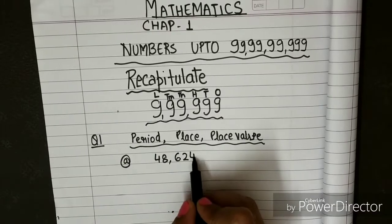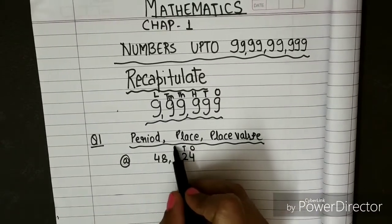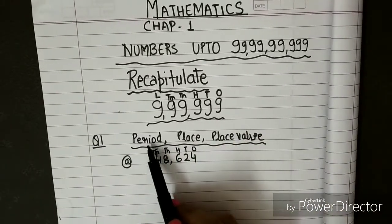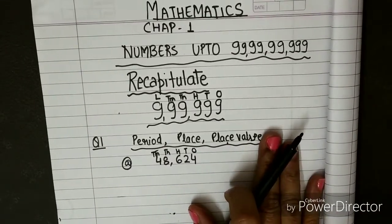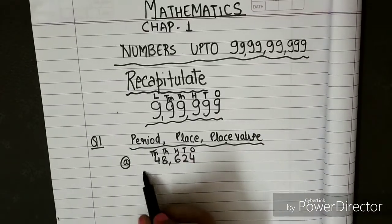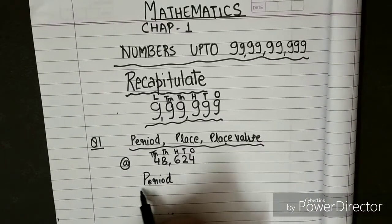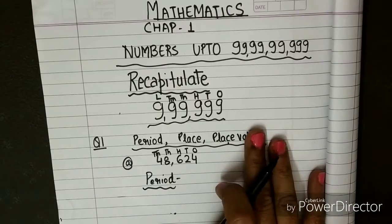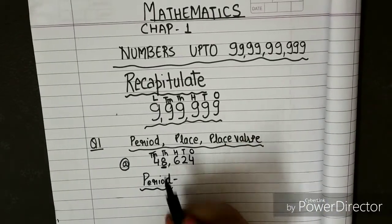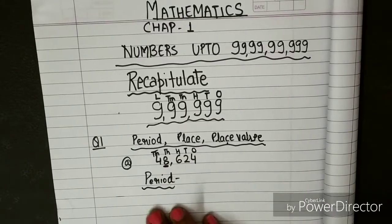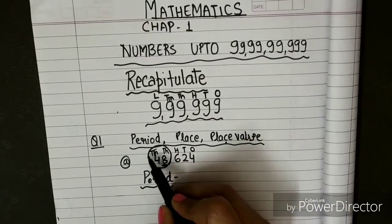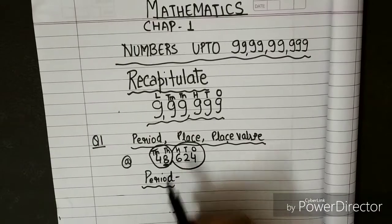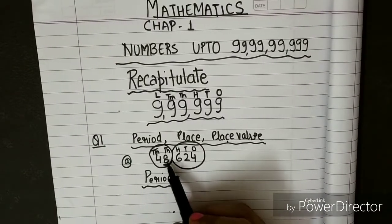The number I am taking is 4,864,624. I will explain using this number. Period — we always say that period means family. Which family does a digit belong to? Today we will look at the digit 8 and which family it belongs to.